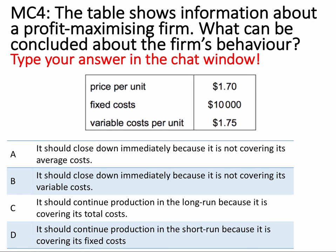Here's the fourth question: the table shows information about a profit-maximising firm — what can be concluded about the firm's behaviour? This is essentially about perfect competition where the price per unit is the same for all units. The answer is B: the firm should close down immediately because it's not covering its average variable cost. The price per unit is $1.70 and the variable cost per unit is $1.75. This relates to the shut-down price concept — if price is less than average variable cost, the firm should close down because it's not covering its running costs.